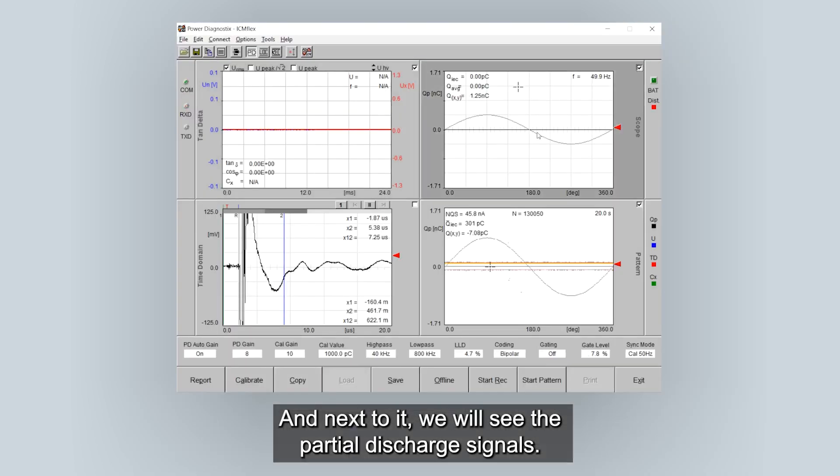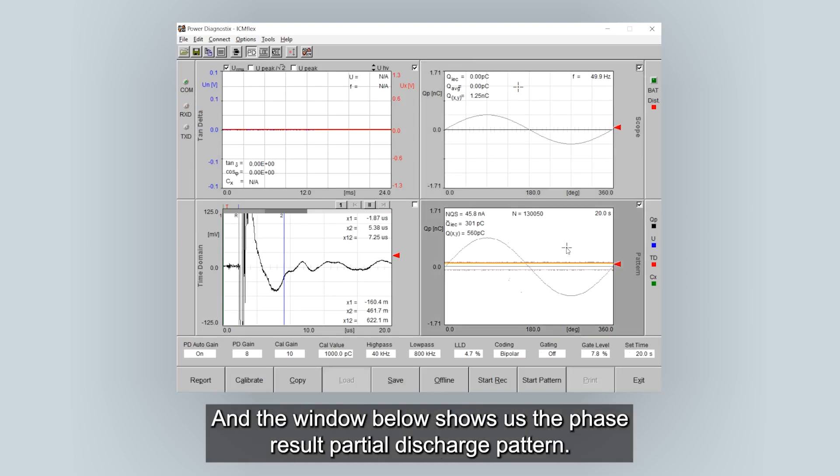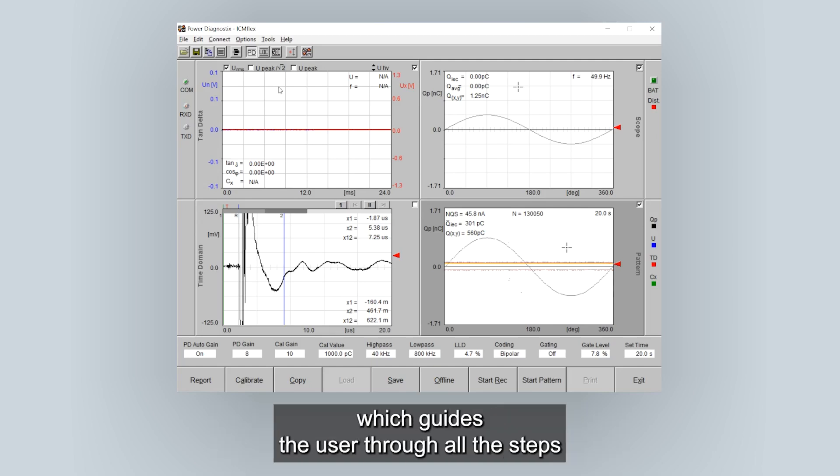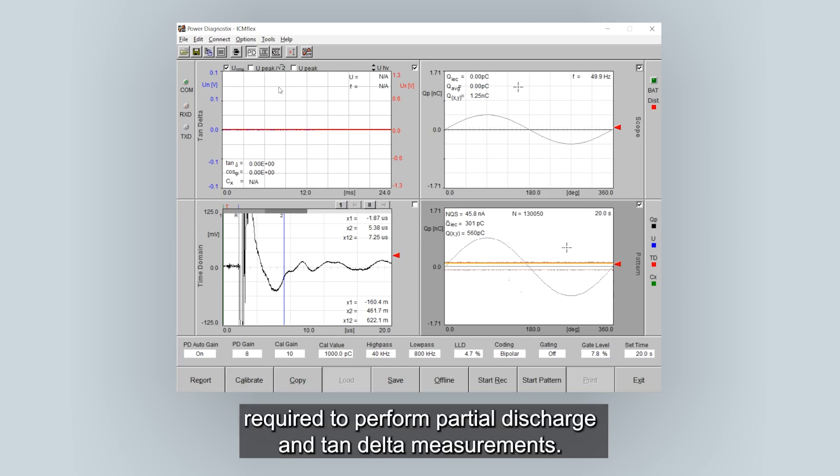Next to it we will see the partial discharge signals and the window below shows us the phase result partial discharge pattern. For this demonstration we would like to use a step-by-step guide which guides the user through all the steps that is required to perform partial discharge and tan delta measurements.